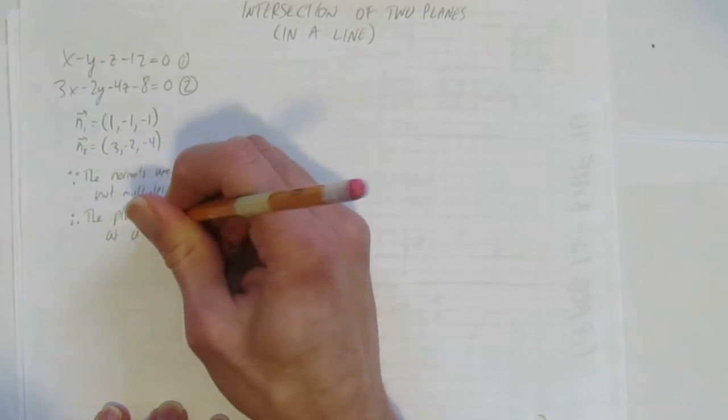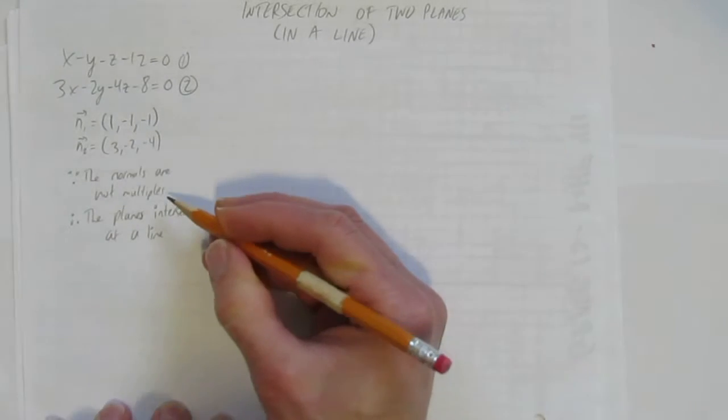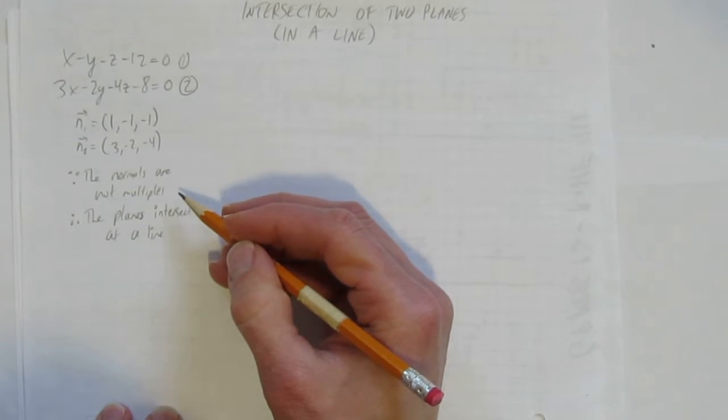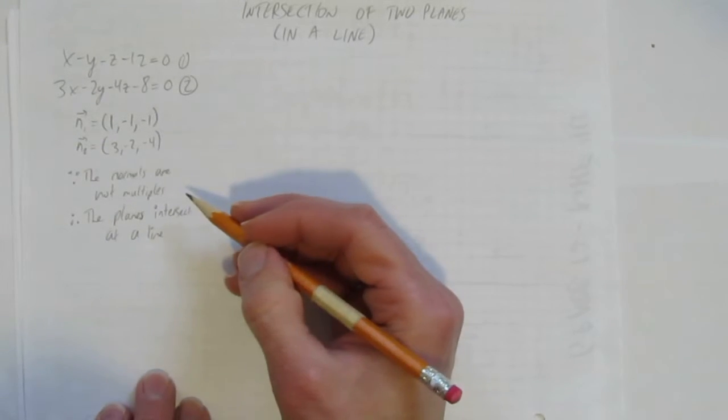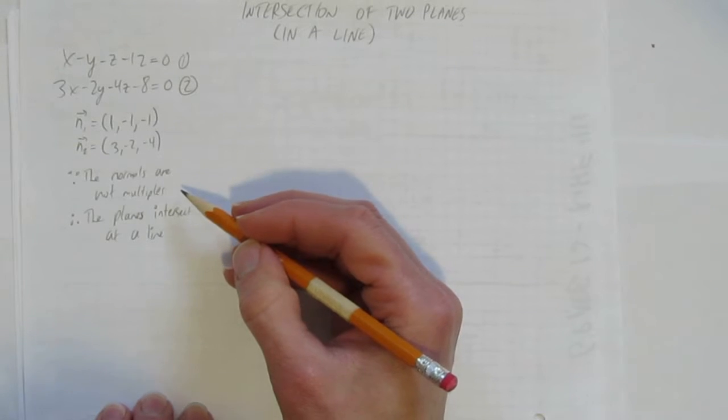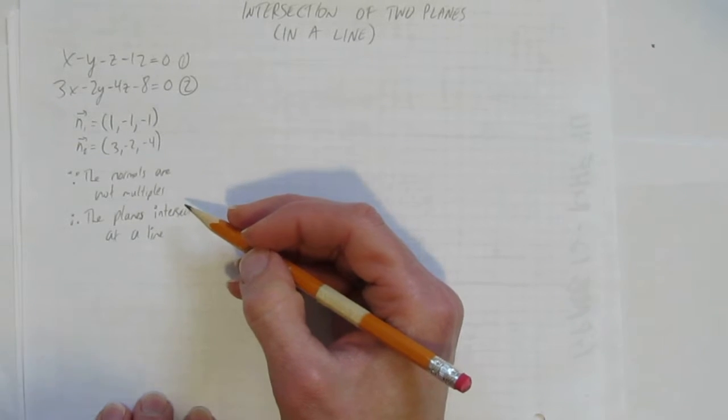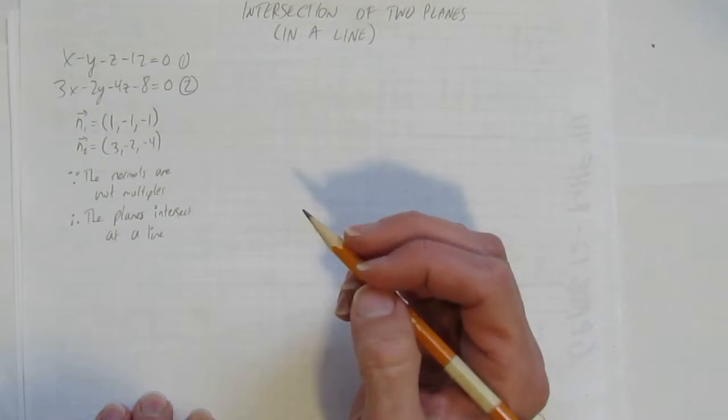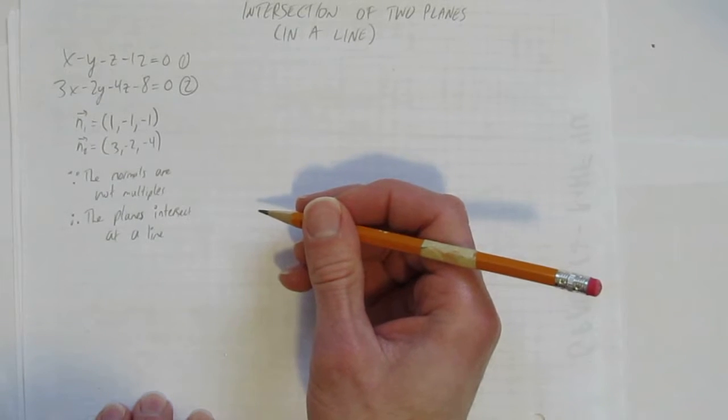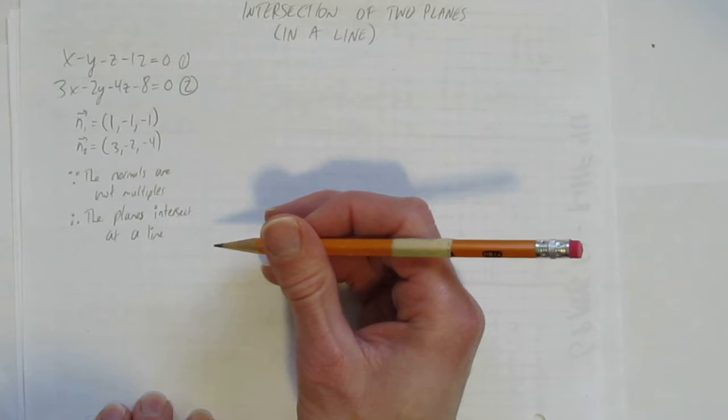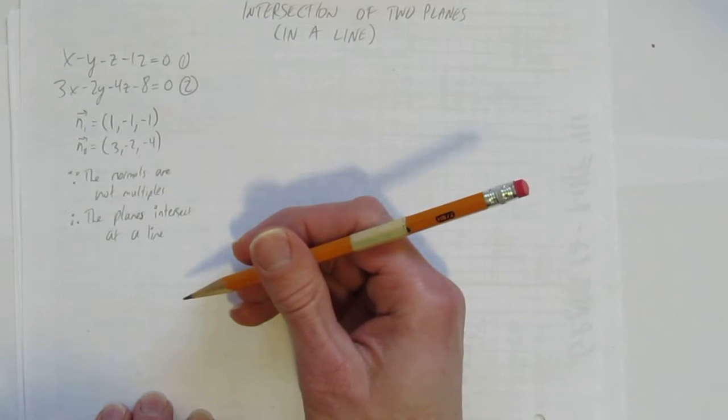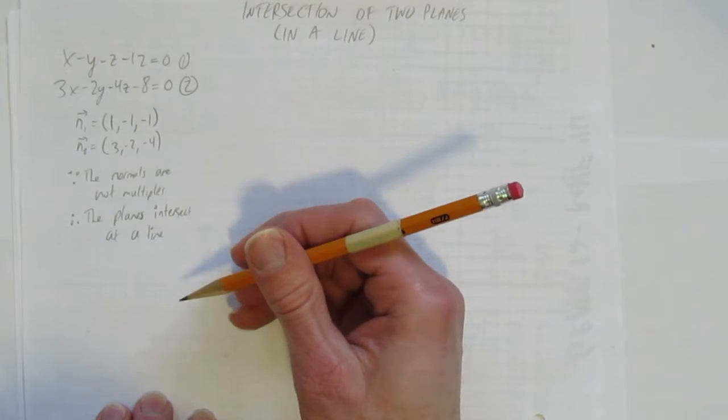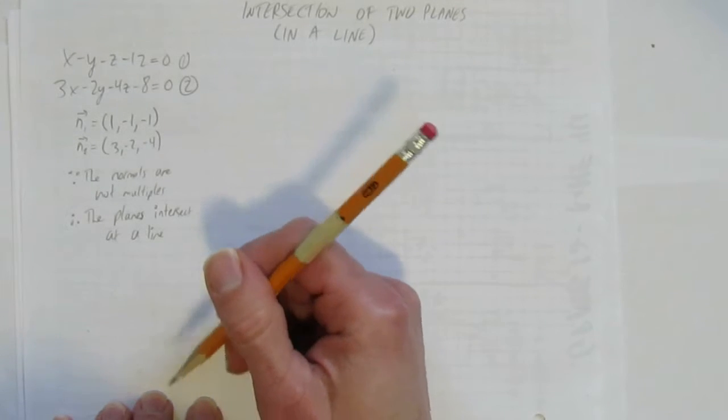Since these normals aren't multiples of each other, that means that the planes themselves have to be on an angle, which means they're going to eventually hit. And when two planes hit, picture a sheet of paper and another sheet of paper in space. If those sheets of paper are not parallel, if you extend them forever, which is what planes are, they're infinite sheets of paper, they have to touch. And they're going to touch where they meet is going to be one long infinite line.